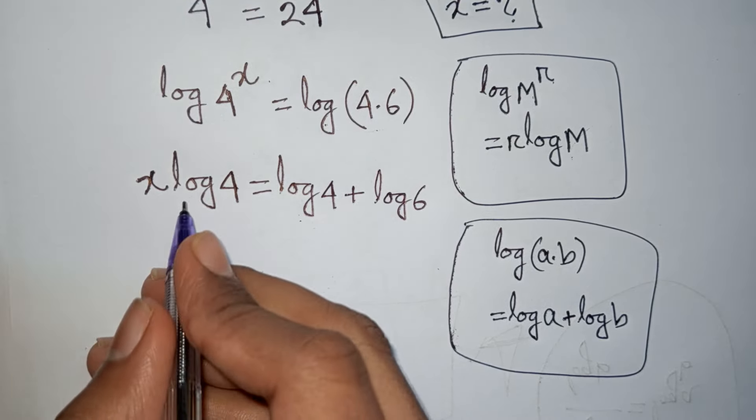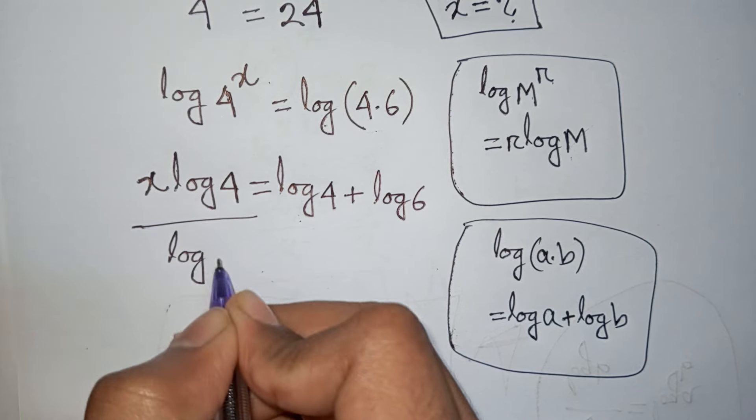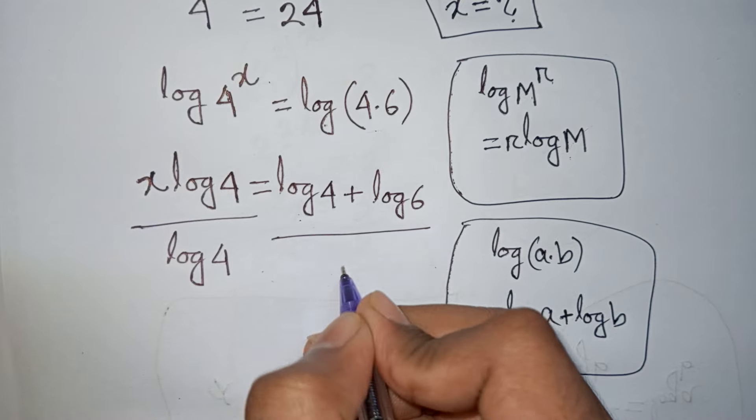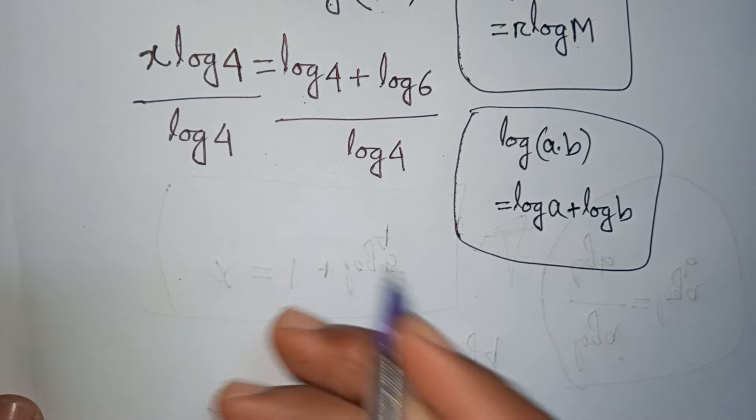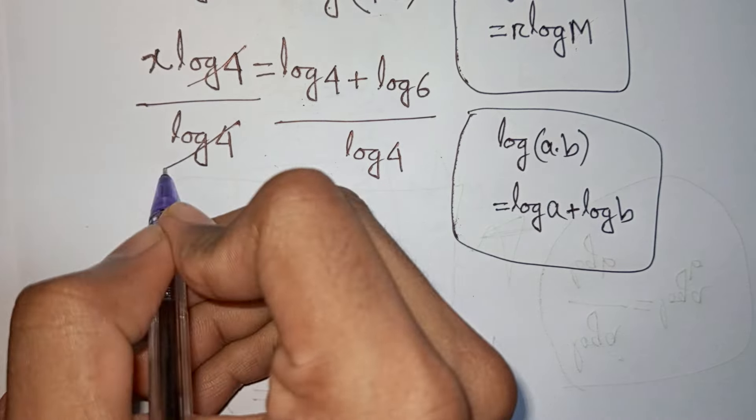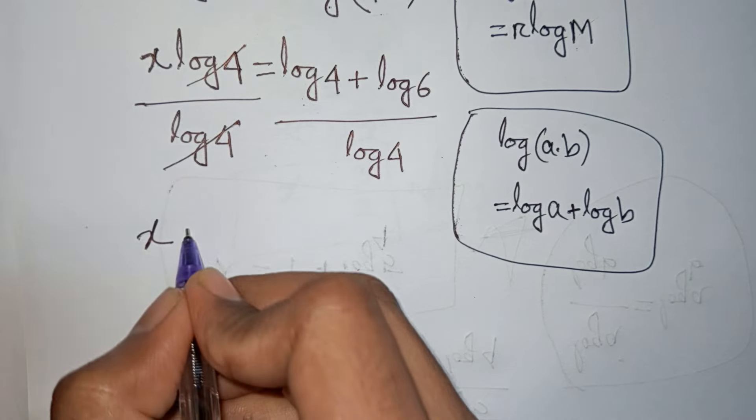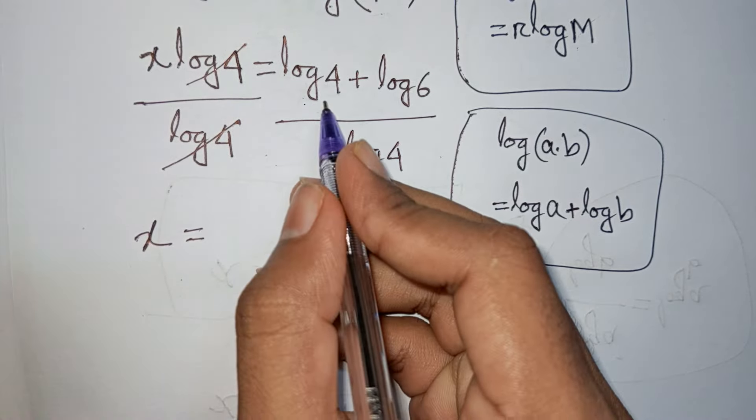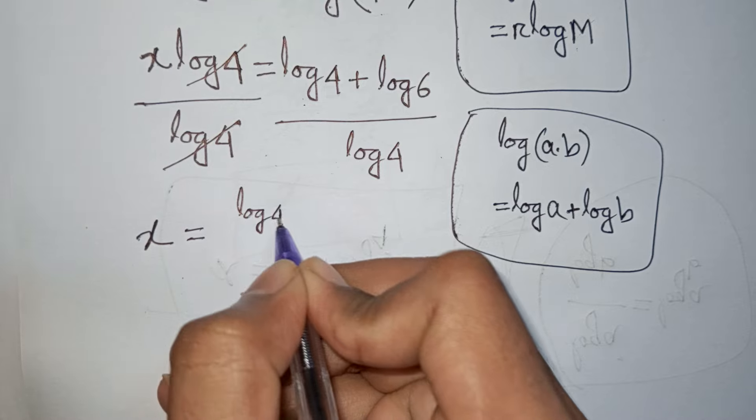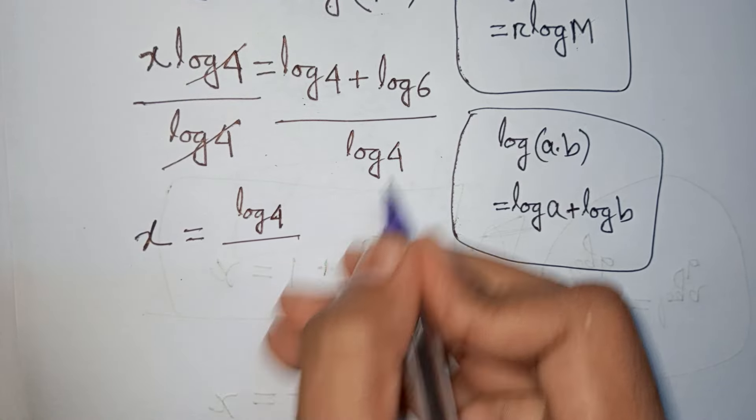Now I divide by log 4 in both sides. So divided by log 4, divided by log 4. Now this log 4, this log 4 will be cancelled. So we have x is equal to, this can be written as log 4 over log 4.